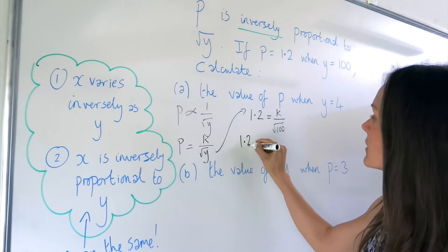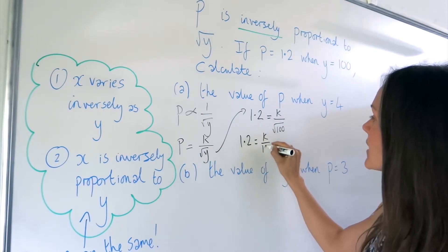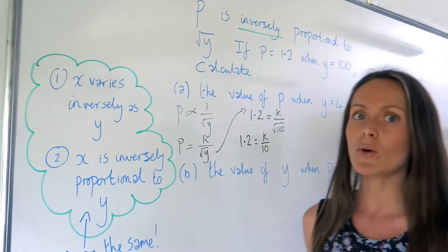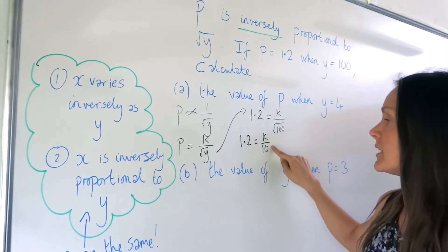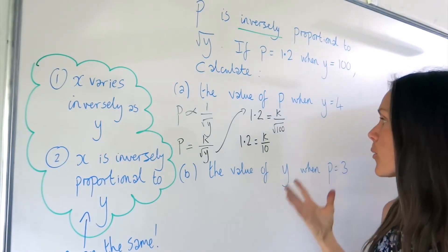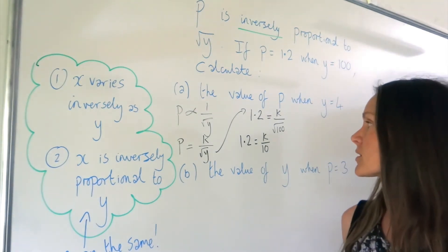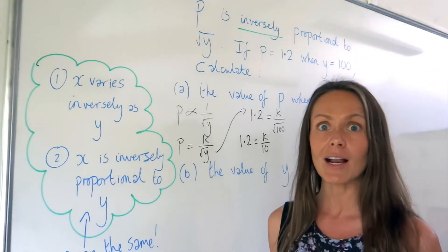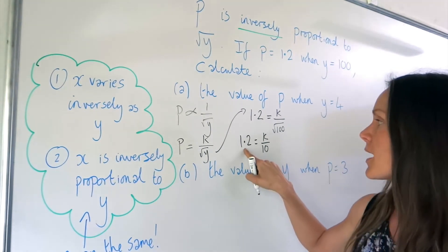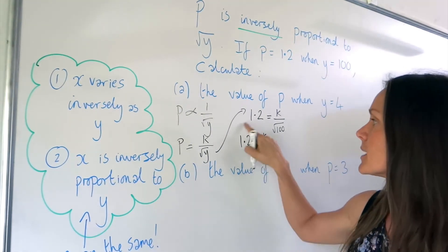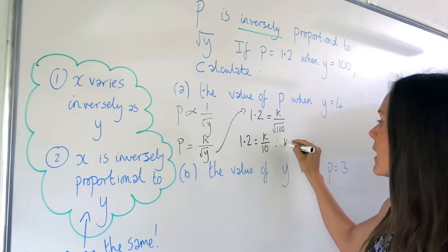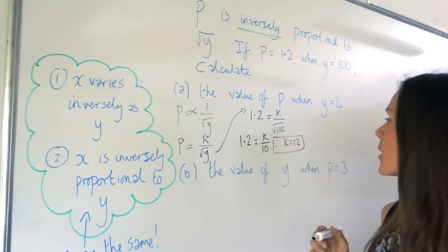So if I want to solve this equation, but K is being divided by 10, the opposite is to multiply by 10. So I'm going to multiply by 10 on both sides, and that will give me the value of K. So when I multiply this side by 10, it gives me 12. So the value of K is just 12.